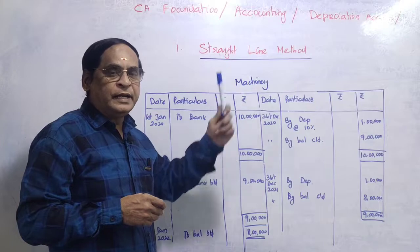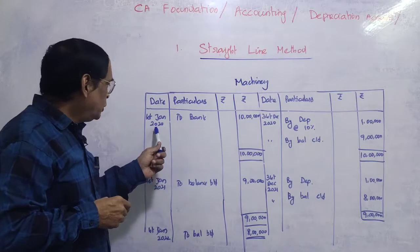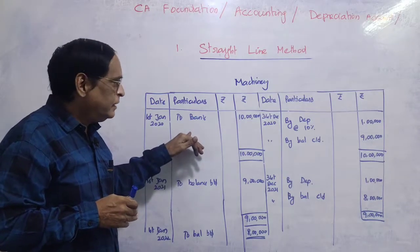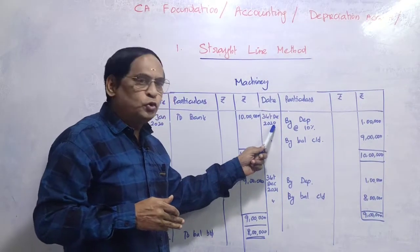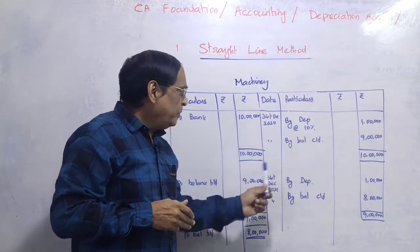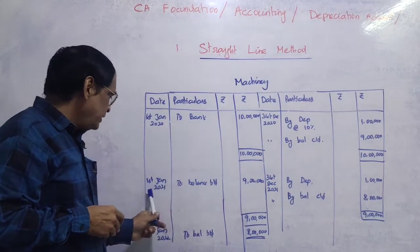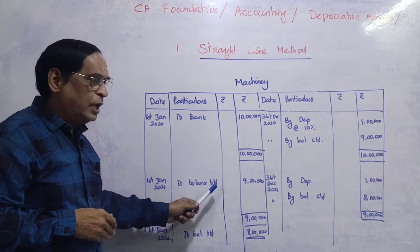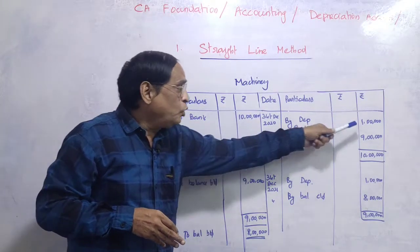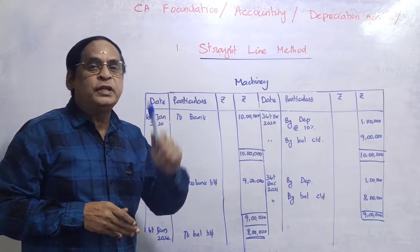Now let's prepare the machinery account under the Straight Line Method. In the ledger, the opening entry on 1st January 2020 shows machinery cost of 10 lakhs, credited to bank — 10 lakhs. Depreciation is 10%, so on 31st December 2020, depreciation is 1 lakh rupees. The balance remaining is 9 lakh rupees, which becomes the opening balance for the next year. Depreciation is constant at 10% on the original value of 10 lakhs, giving 1 lakh depreciation each year.